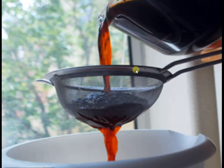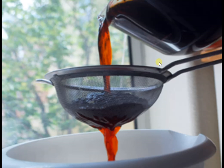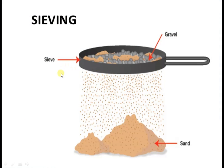We use sieves to separate tea leaves from tea and sand from gravel. What are the differences between the sieves used in these two instances? In the first instance, tea leaves are the solid substances being separated from a liquid. In the second instance, we separate gravel from sand — they are both solid substances.